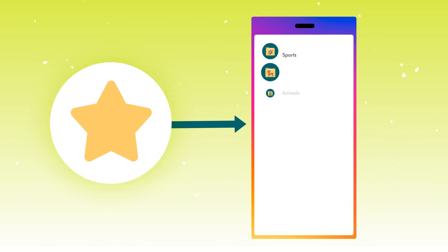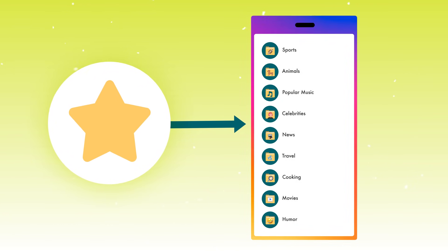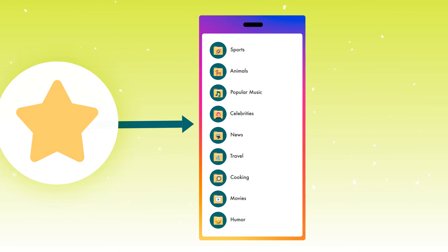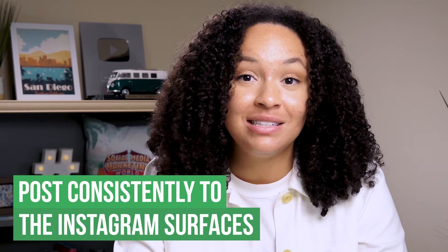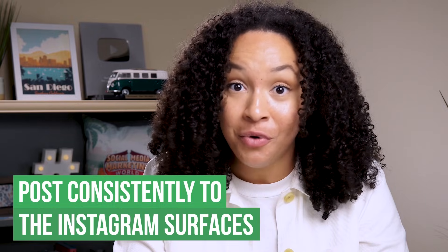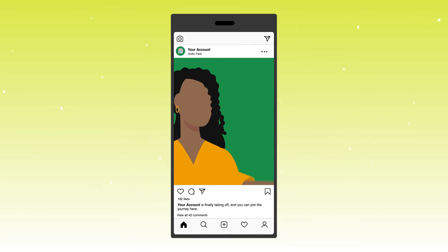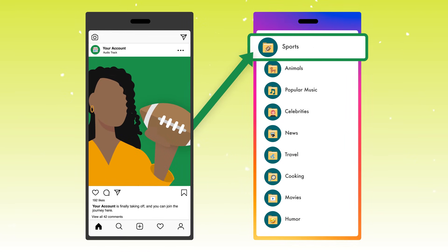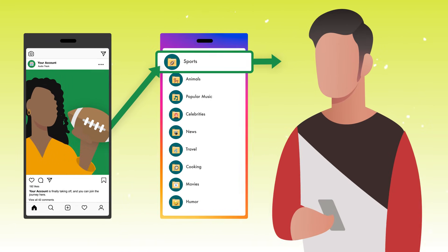Interest is how Instagram categorizes content it thinks you will like, based on what you've engaged with in the past. This is why it's really important to be consistent — not only with how often you're posting, but how you're consistently posting about those different categories on your own account. Instagram has a lot of data on its users, so the better you can create content around those interest categories, the better it can match-make your content for those ideal followers.